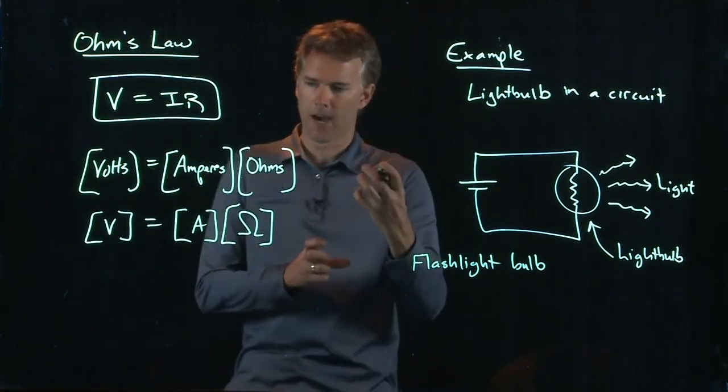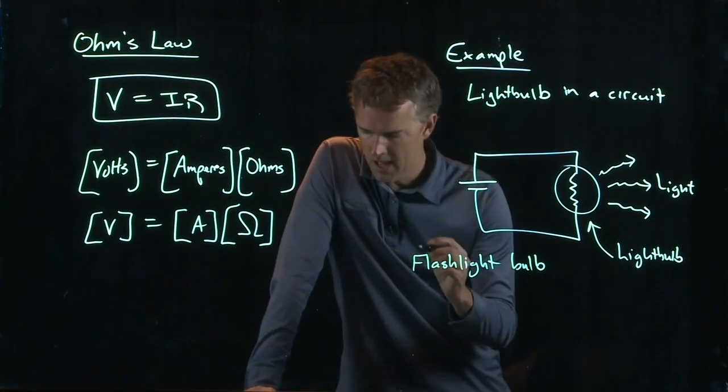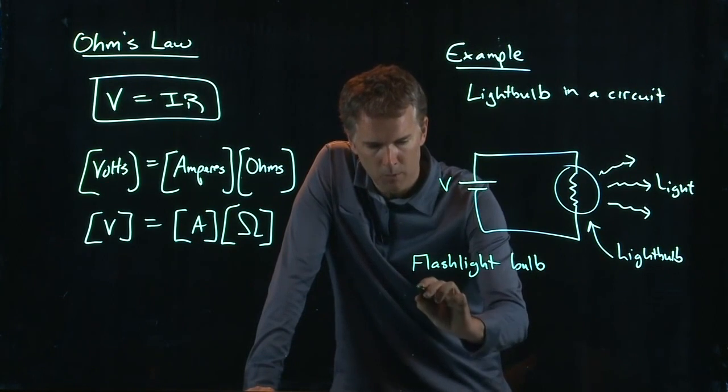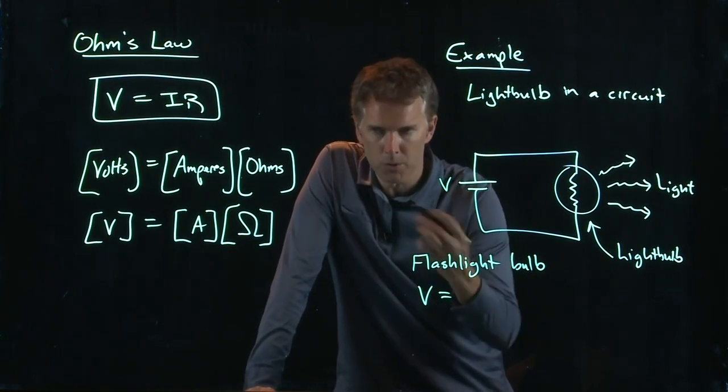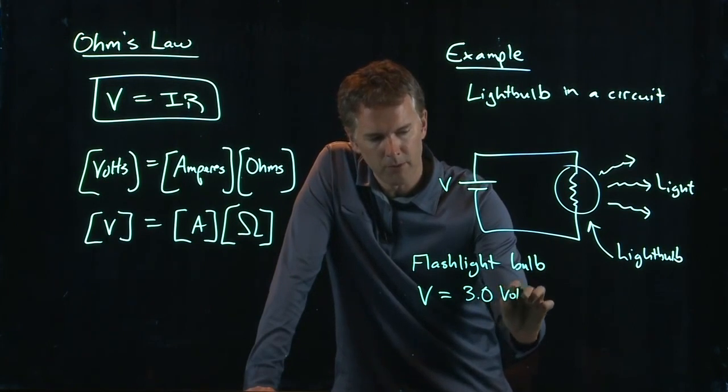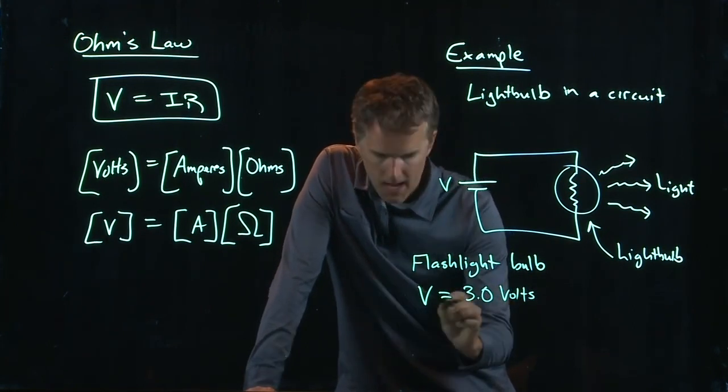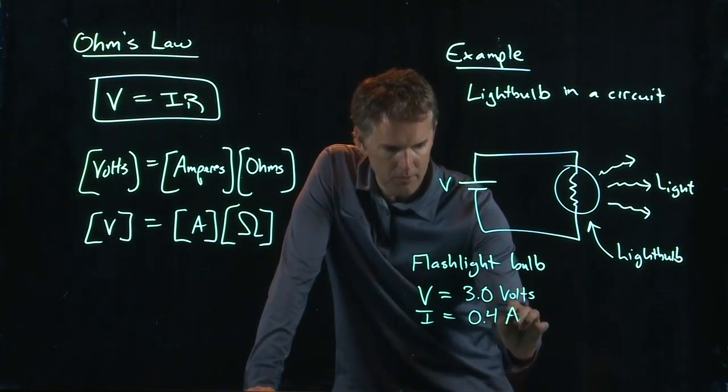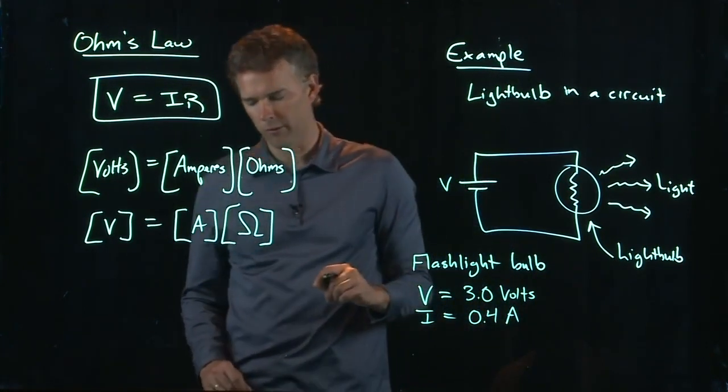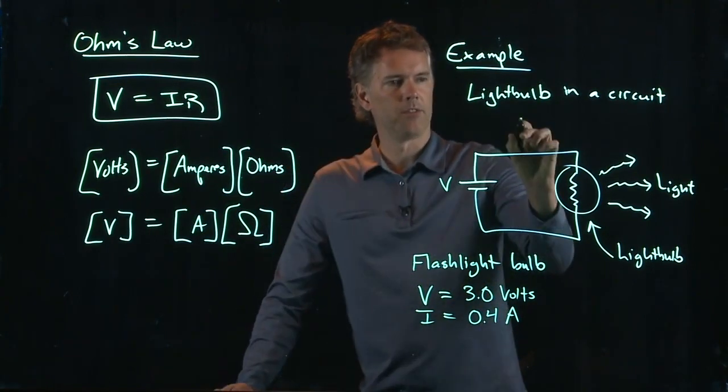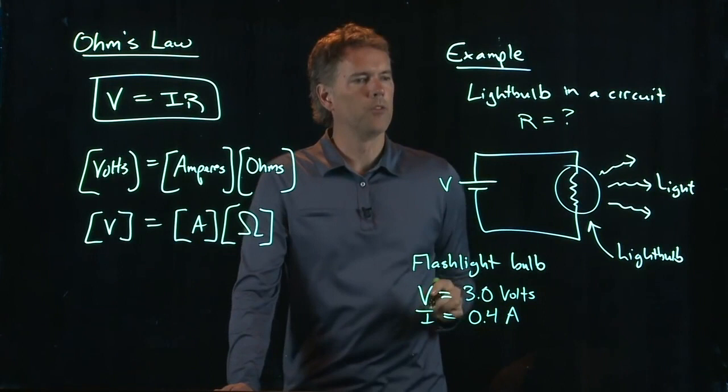So in your flashlight, you've got a couple D batteries. A D battery also has a voltage of 1.5 volts, but let's say we have two of them in a row. So we'll say V is 3 volts, and the current that runs through it is maybe 400 milliamps, which is 0.4 amps. And let's figure out what the resistance of the bulb is.